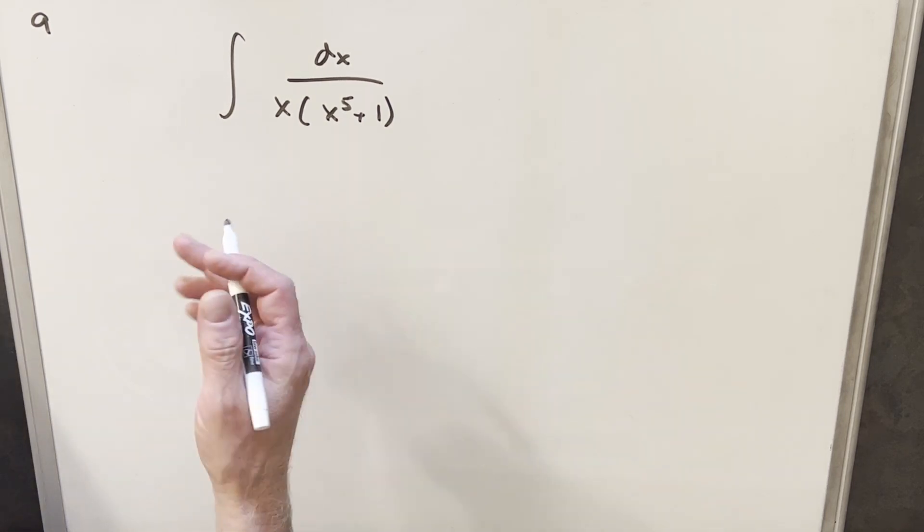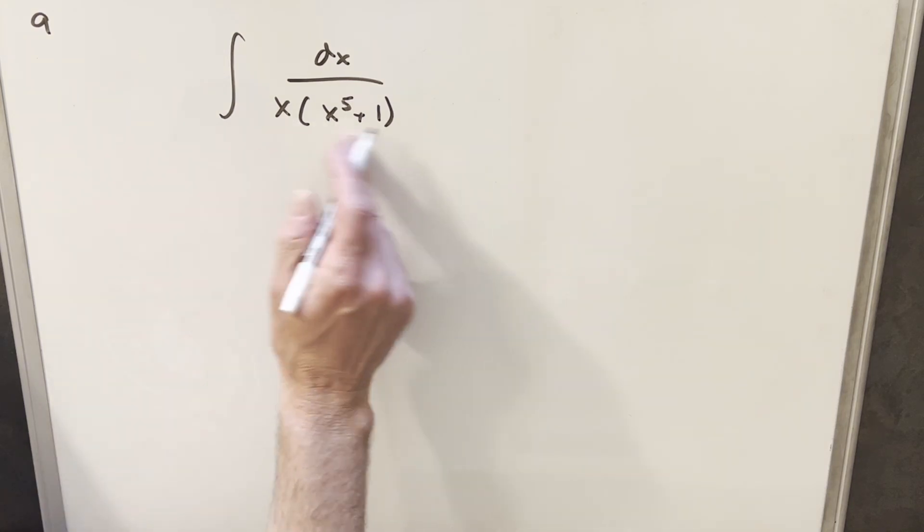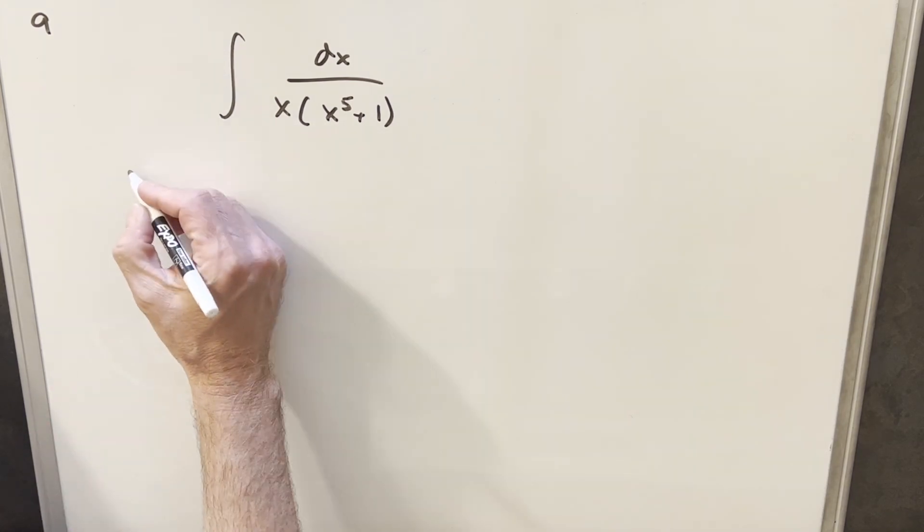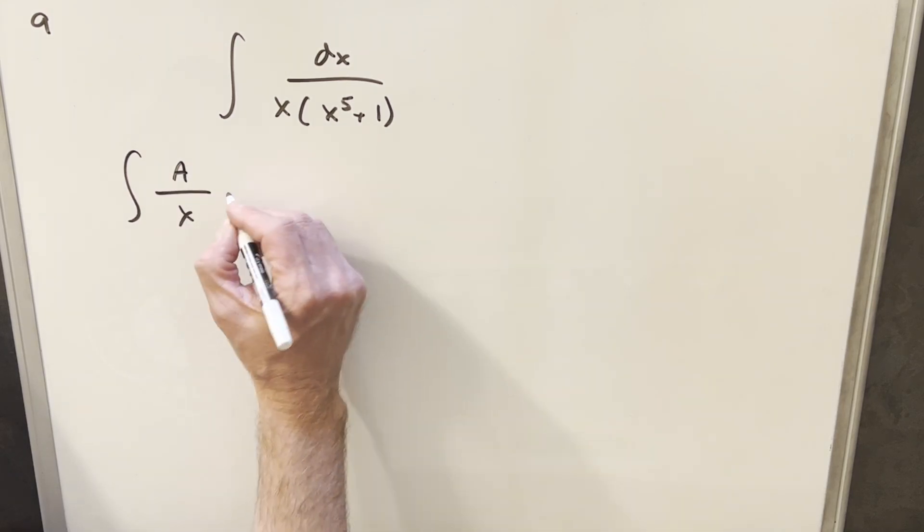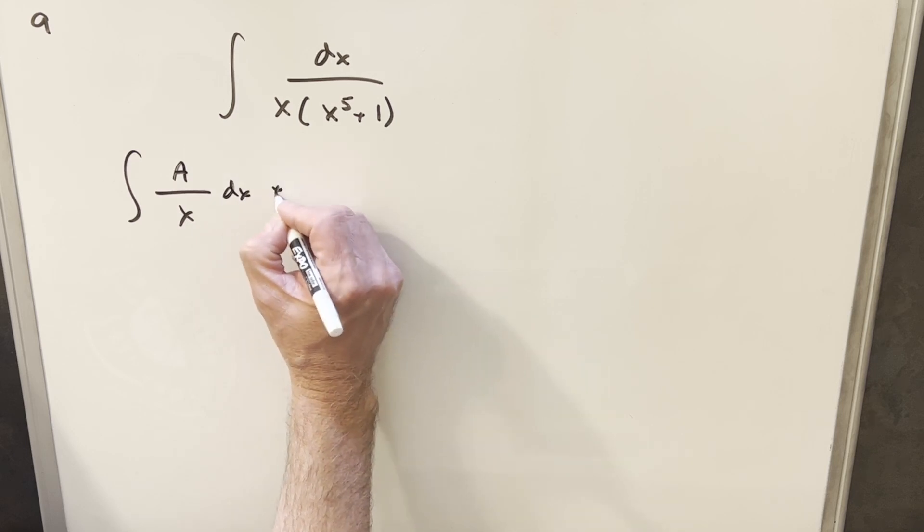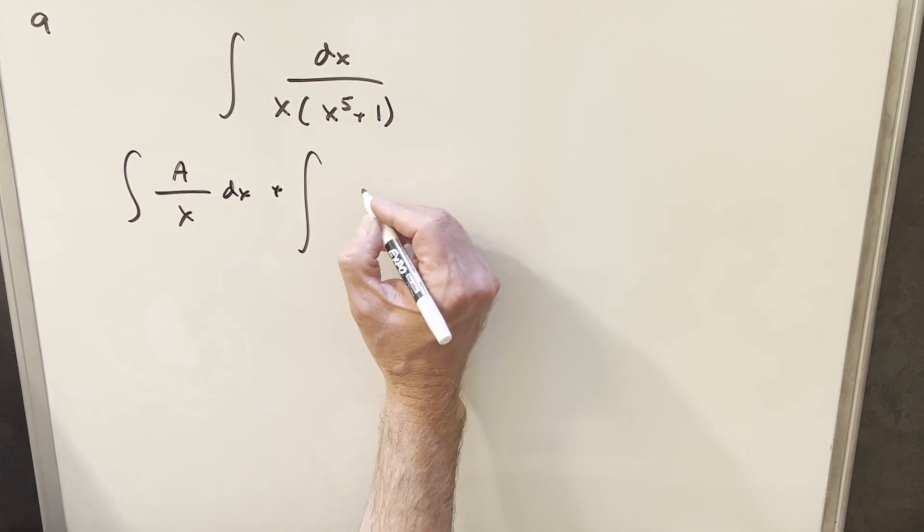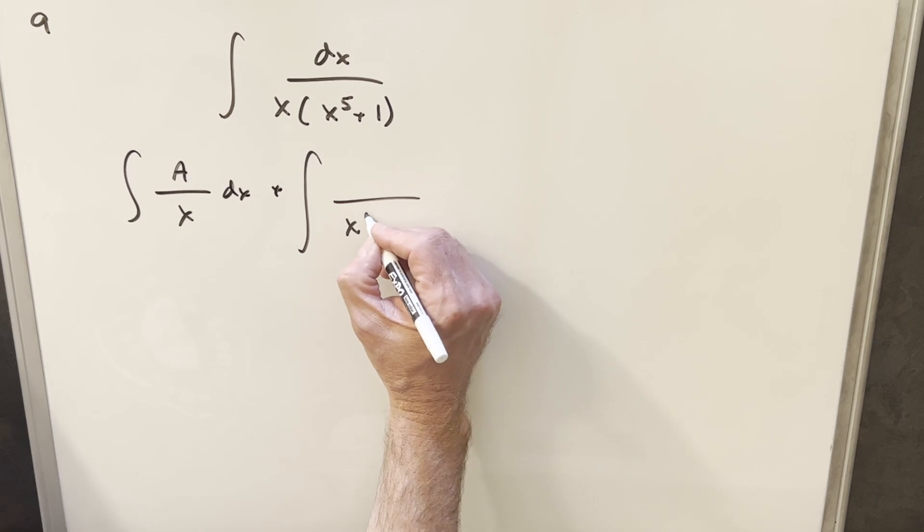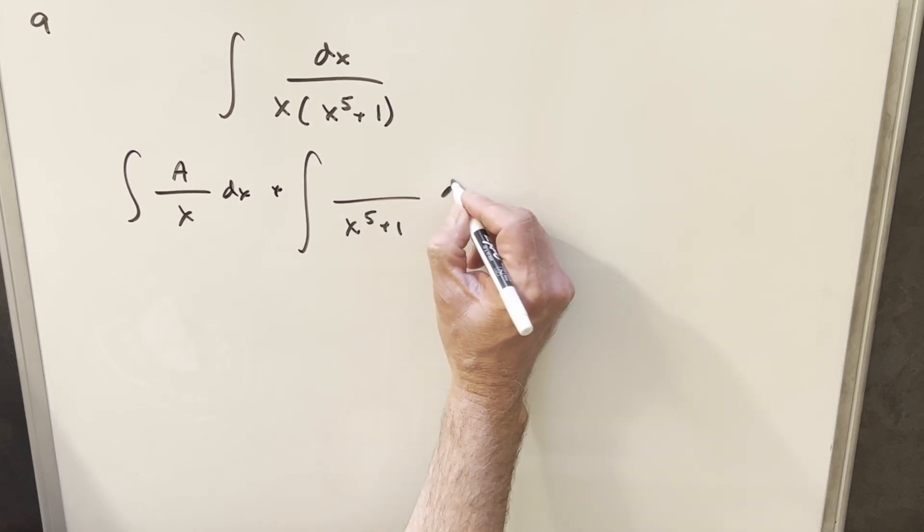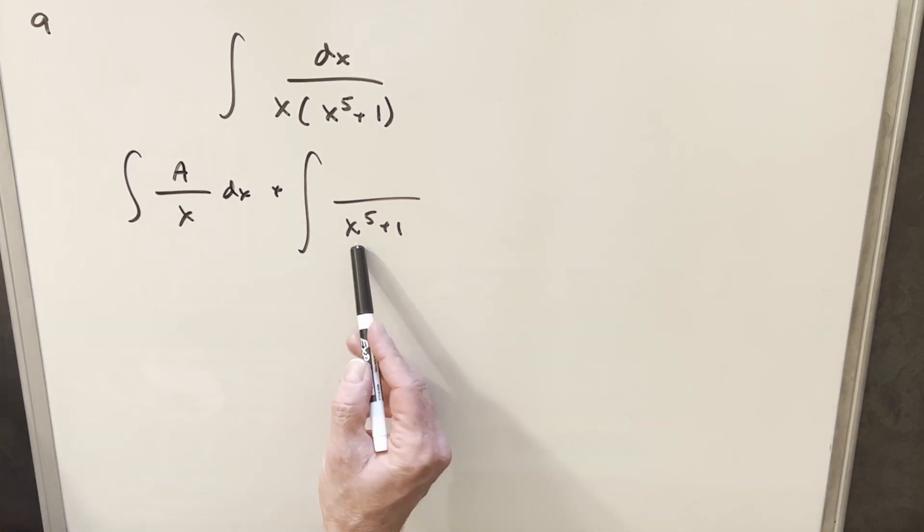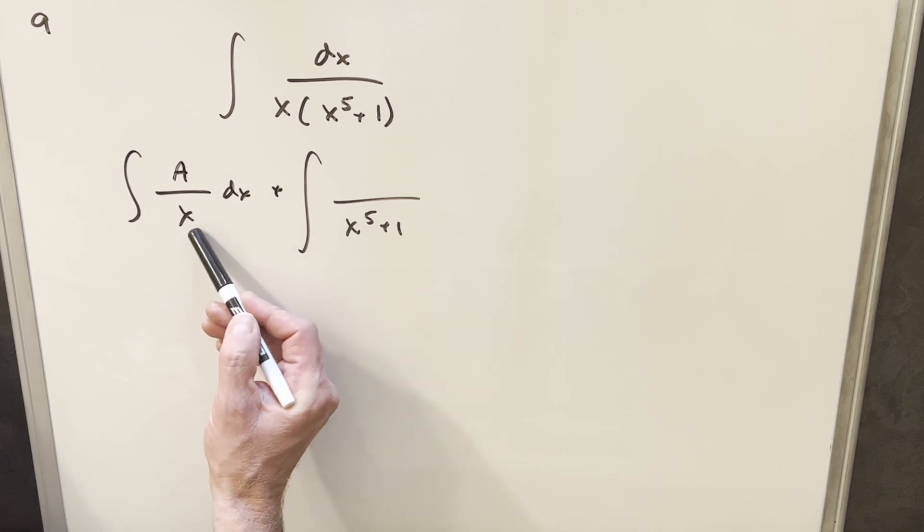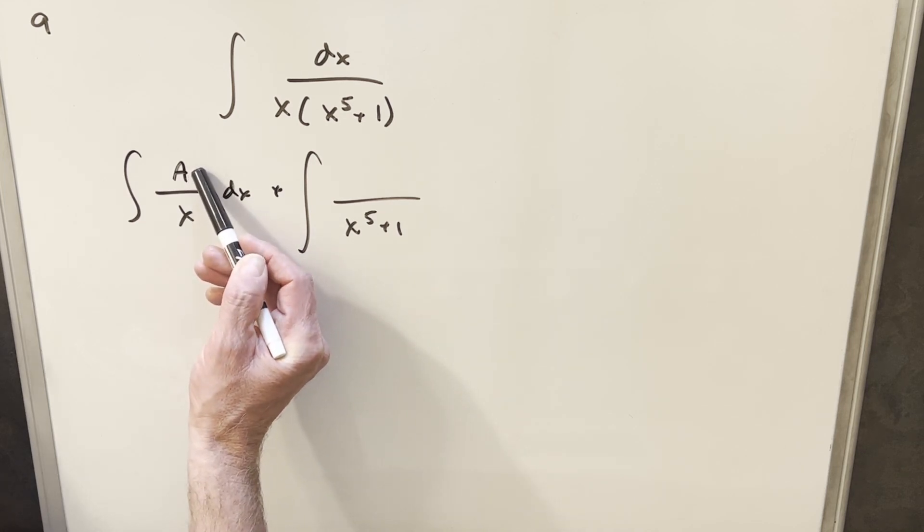So what I'm going to do for the partial fractions, I like to think of this as like when you get a common denominator on a fraction, we're just doing the reverse. We're breaking it up instead of putting it together. So we'll break this up as A over x dx plus, and then here we're going to have our x to the fifth plus one in the denominator. But I think I'm going to need a lot more space because what we want in the numerator is going to be one degree less than our denominator. Like here, this was first degree, so we have zero degree or constant.